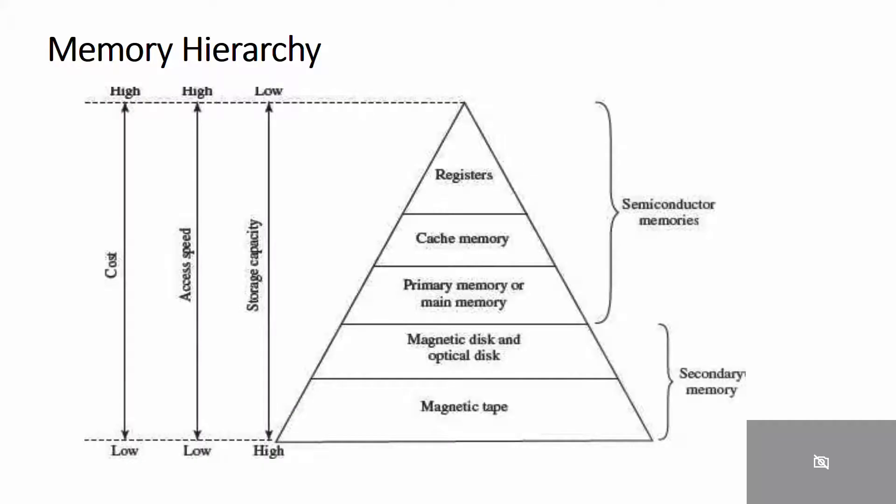The lesser the access time, the faster the speed of the memory. Ideally, we want memory with the fastest speed and largest capacity. However, the cost of fast memory is very high. The computer uses a hierarchy of memory organized in a manner to enable the fastest speed and largest capacity of memory, as you can see in the figure in the slide.